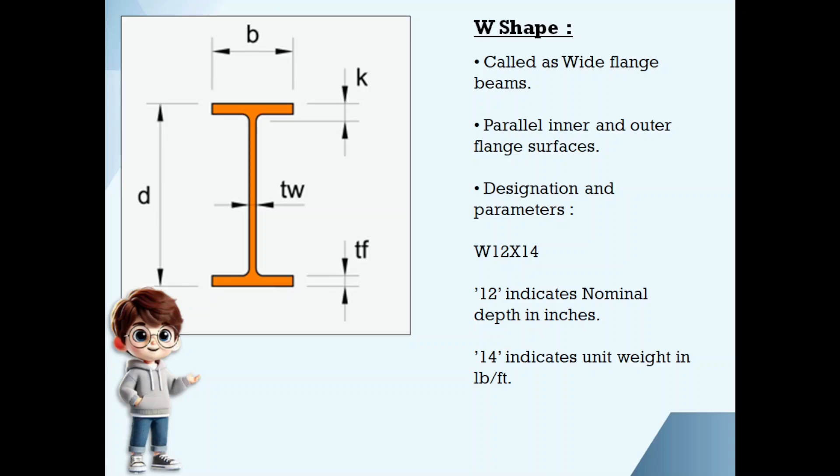These have parallel outer and inner flange surfaces. For example, if you take W 12 by 14 beam, 12 indicates nominal depth, 14 indicates unit weight in pounds per feet. Which means that if you take one foot long W 12 by 14 member, its weight will be 14 pounds.